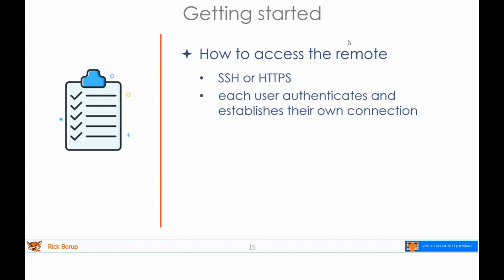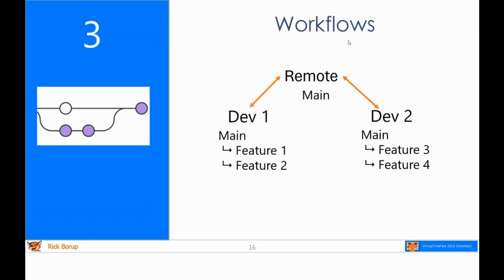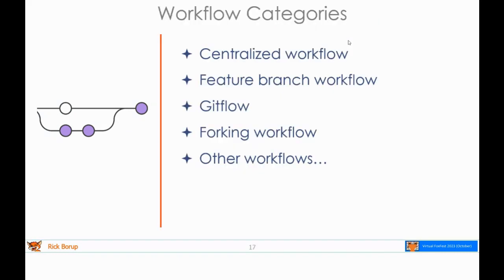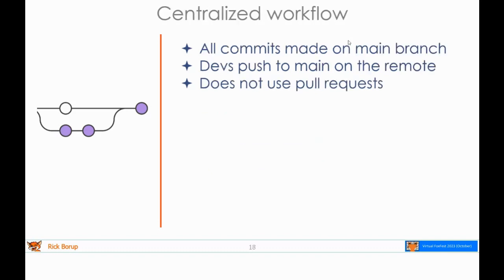Now I'd like to talk about workflows, because a lot of what we're doing today deals with how we use the remote in connection with our local repositories. Workflows can generally be categorized into four or five areas: centralized, the feature branch workflow model, GitFlow — which is kind of its own thing — the forking workflow, which involves creating forks, and other variations typically based on those four. Let's take these in order and talk about the advantages and disadvantages of each.